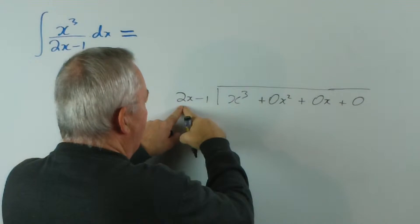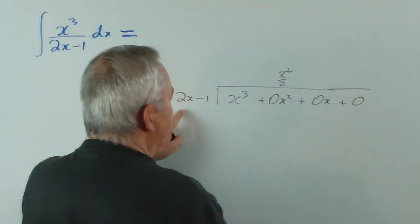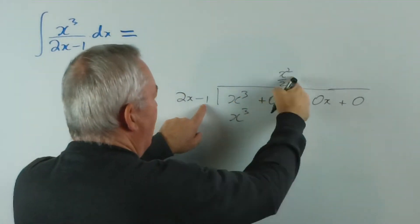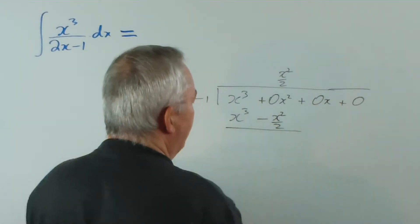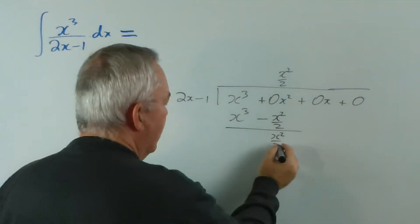Now, x cubed divided by 2x is going to be x squared on 2. So that will give us our x cubed. And negative 1 times this will be negative x squared on 2. We subtract, we get x squared on 2.